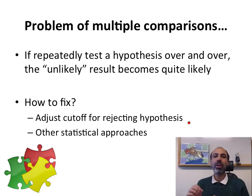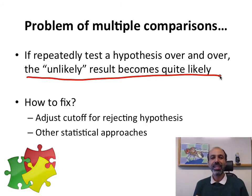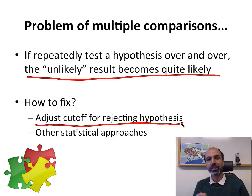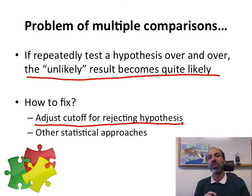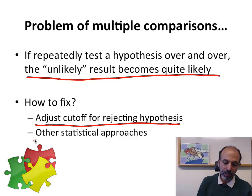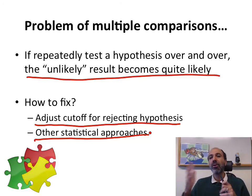This is the problem of multiple comparisons: if you repeatedly test a hypothesis over and over, the unlikely result becomes quite likely. How do you fix this? Statistically, there are two things you can do. One is to adjust the cutoff for rejecting the hypothesis — for example, use p equals 1 times 10 to the minus 6 instead of 0.05. One famous correction is called the Bonferroni correction. The other approach is to use a completely different statistical method that has a false discovery rate, where you estimate how often you would get a false answer.